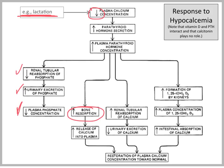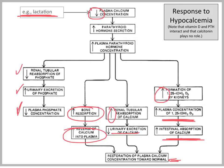At the bone, PTH will increase bone resorption, releasing calcium into the plasma. At the kidney, the effect on calcium is to increase renal tubular reabsorption, reducing excretion of calcium and contributing to restoration of plasma calcium. An additional renal effect is the activation by PTH of 1,25-hydroxyvitamin D. This increased vitamin D will increase intestinal absorption of calcium, further restoring plasma calcium. Note that vitamin D and PTH interact here, whereas calcitonin plays no role in the response to hypocalcemia.